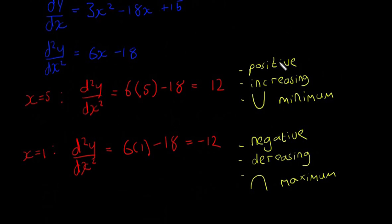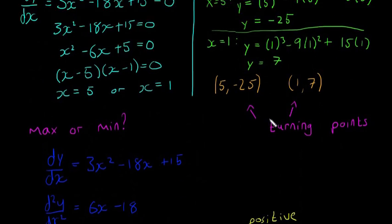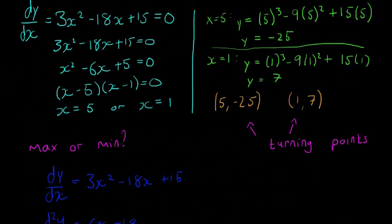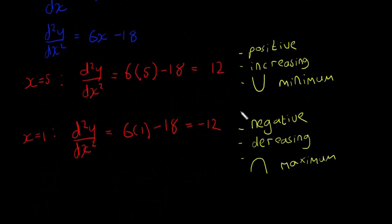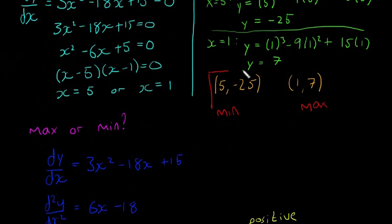It's best to go through those three steps every time you evaluate d²y/dx² just to make sure you don't get mixed up — it's logical if you think about it that way. So x equals 5 is a minimum and x equals 1 is a maximum. Going back up, (5, −25) is our minimum and (1, 7) is our maximum. There are our two turning points, and we've established whether they're minimum or maximum.